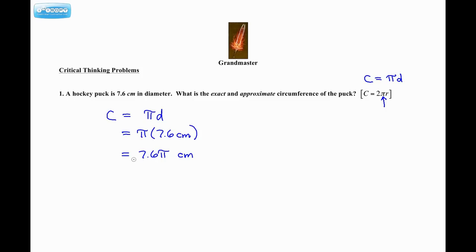Okay, you should not write this as pi 7.6. By convention, if you're ever multiplying a number times some kind of symbol, in this case pi, you always put the number in front. That's a convention. Please don't start inventing your own. No one will know what you're talking about.